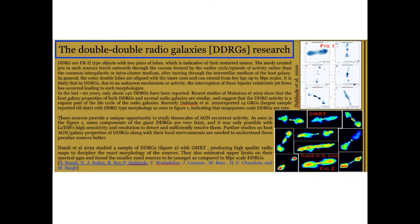Recent studies show that the host galaxy properties of both DDRGs and normal radio galaxies are similar and suggest that the DDRG activity is a regular part of the life cycle of radio galaxies. Therefore, it is worth mentioning that this episodic nuclear activity could also be the reason behind radio galaxies growing to giants. More studies are required to answer these questions.